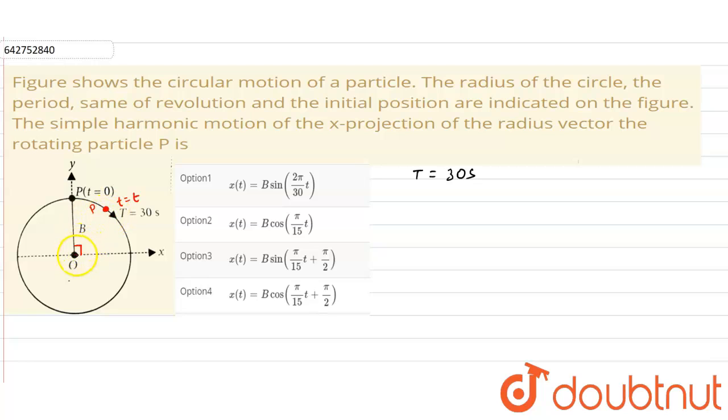Now at time t it will cover an angle of omega t. This angle will be omega times t. So it will make an angle of π/2 minus omega t with the x axis.